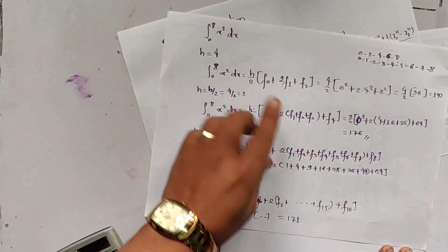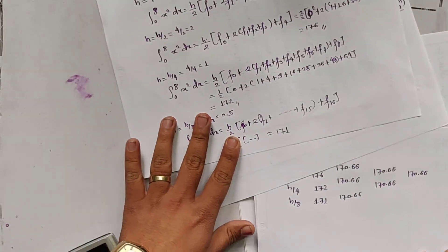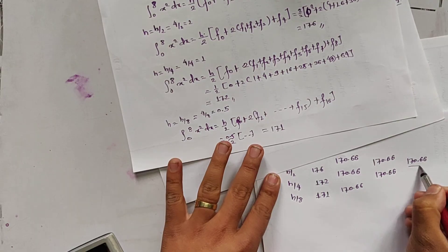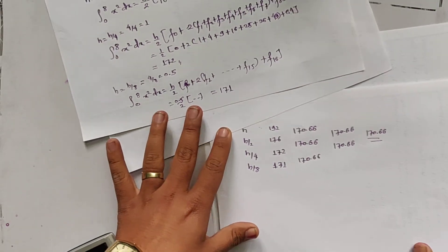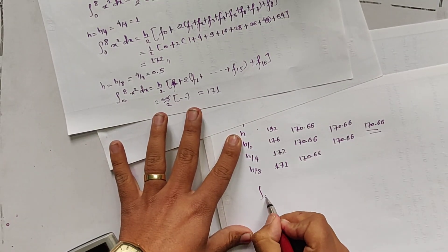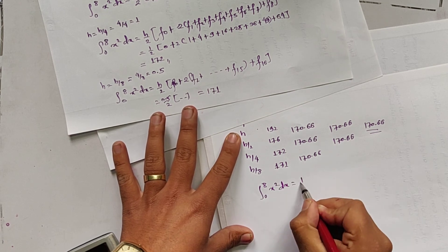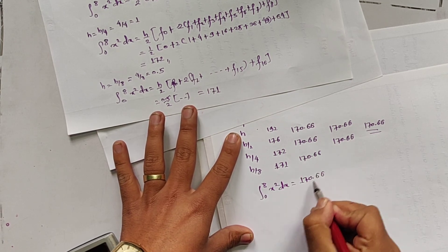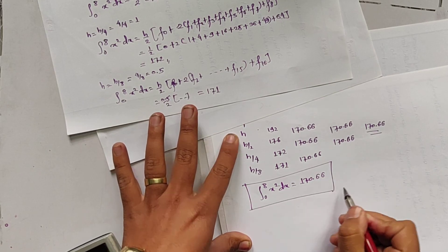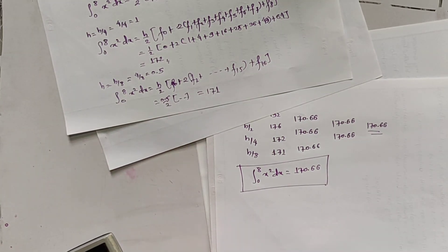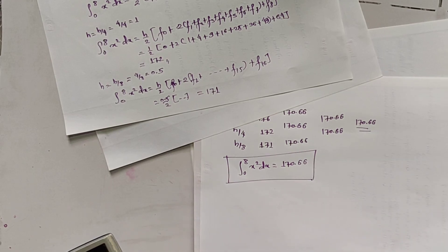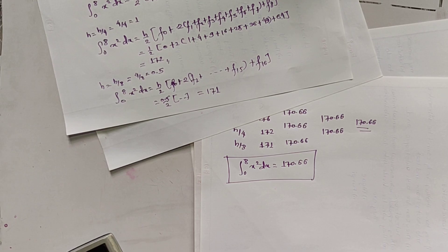So the required value of the integral ∫₀⁸ x² dx = 170.66. This is the end of numerical integration. From the next video, I will be starting differentiation — partial differentiation. Thank you and bye-bye.